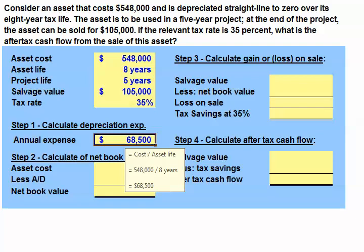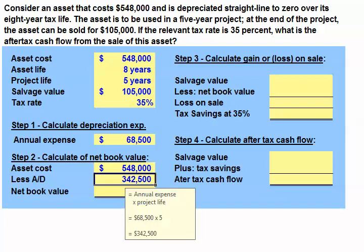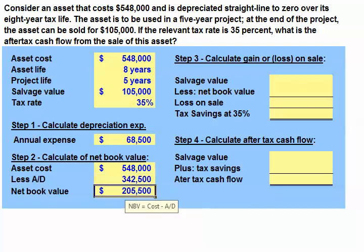The second step is to calculate the net book value of our asset. The net book value will be our asset's cost of $548,000 minus any accumulated depreciation at the end of the project's five-year life. Our accumulated depreciation at the end of the project's five-year life will be our annual depreciation expense of $68,500 multiplied by the five-year project life. Our accumulated depreciation is $342,500, giving us a net book value of $205,500.